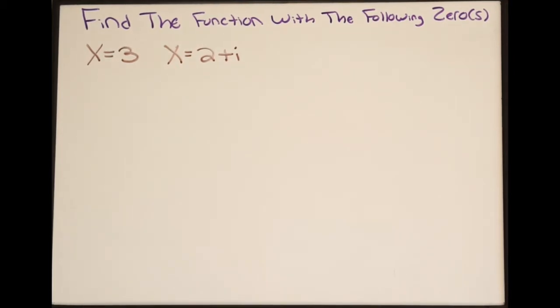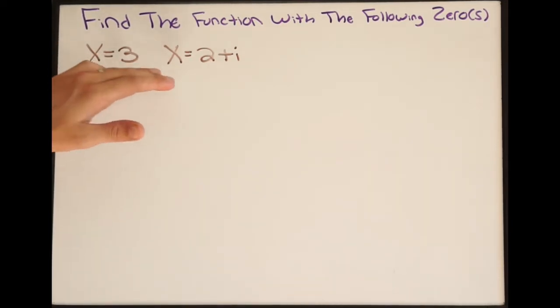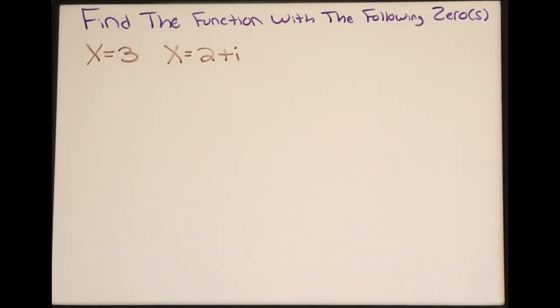In this example we're being asked to find the function with the following zeros. We are provided some zeros: x equals 3 and x equals 2 plus i.